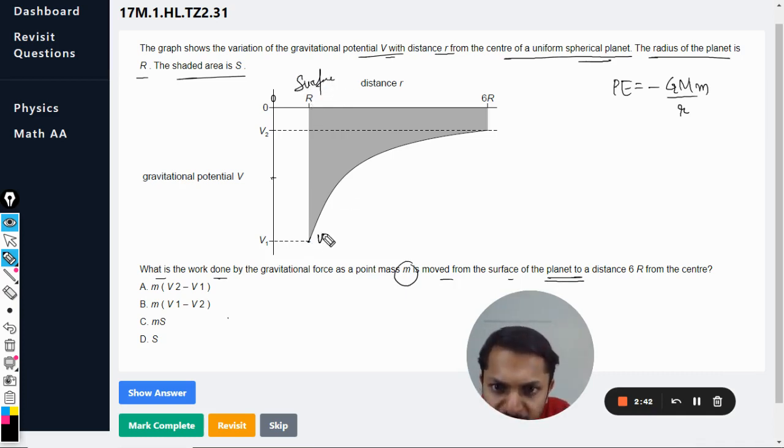So the potential at that point is V1. Now the body is moved from a point where the potential is V1 to another point where the potential is V2, which is at the distance of 6R from the center. So what is the work done?